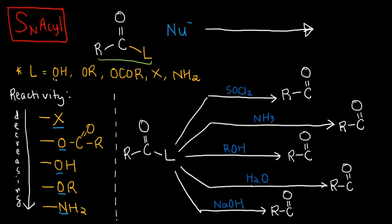If my L is an OH, then I have a carboxylic acid because it's RCOOH. If I have RCOOR, that is an ester. If I have RCOOC double bond OR, that is an anhydride.